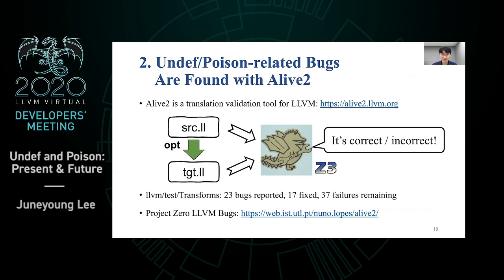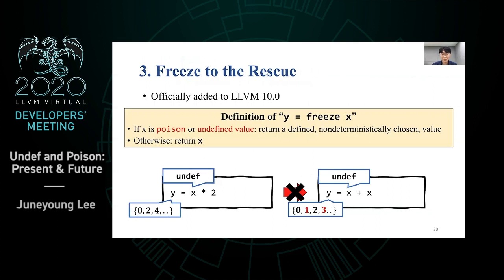Alive2 takes two pieces of IR code and checks whether the first one is correctly translated to the second using an SMT solver. For the online version, you can visit the website and try it out. Alive2 detected many failures from existing unit tests under the test-transforms directory. 23 bugs are reported and 17 are already fixed. There are still 37 unit test failures unreported because either the fix is non-trivial or it isn't likely to cause end-to-end miscompilation in practice.